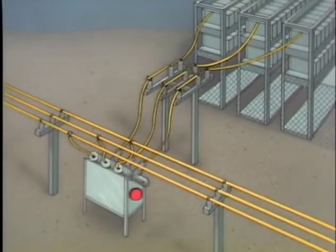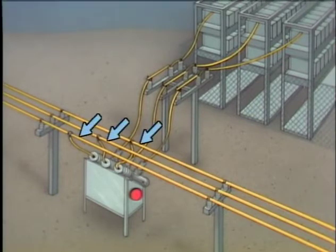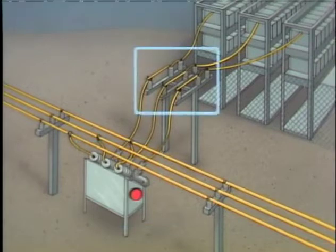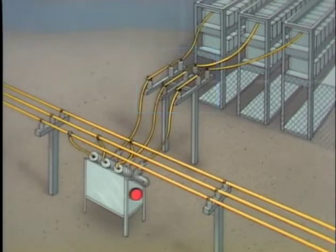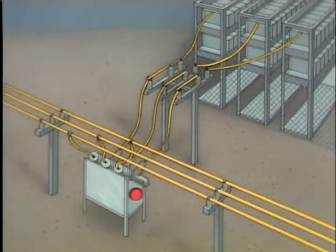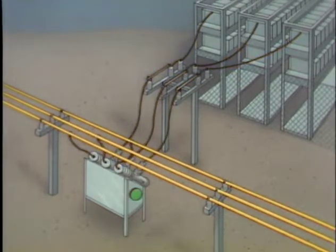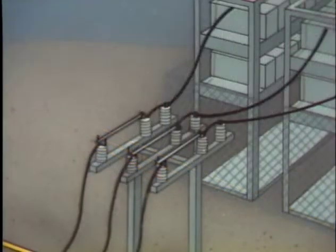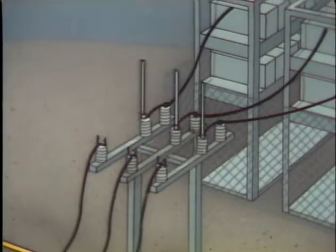This simplified illustration will help show the general principles of de-energizing and isolating a capacitor bank. The illustration includes an energized three-phase bus, a three-phase circuit breaker, three single-phase disconnect switches, and a three-phase capacitor bank. A capacitor bank is de-energized by electrically separating the bank from its source of energy — in this example, by opening the circuit breaker. A capacitor bank is isolated by physically separating it from its source of energy. In this example, three single-phase disconnects are opened to provide a visible break between the source and the bank.